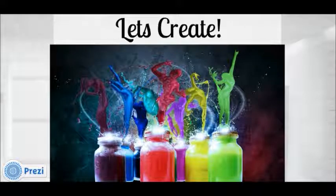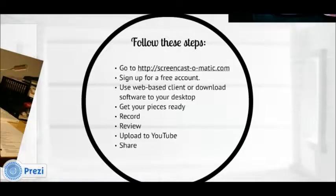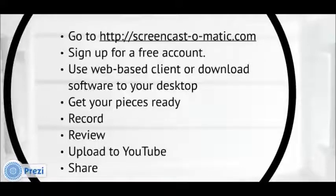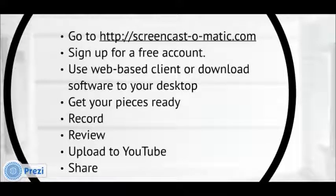So let's take a look at the steps you will have to go through to create your screencast with Screencast-O-Matic. First, go to Screencast-O-Matic.com, where you will see a 'Start Recording' button. You can sign up for a free account, or you don't have to sign up in order to record. If you do sign up, all you need is an email and a password — you don't have to wait for a confirmation email. There are two choices: you can use the web-based client or download the client software to your desktop. I usually recommend downloading the software to your desktop, so that if you don't have an internet connection, you can still create a screencast and upload it to YouTube later.